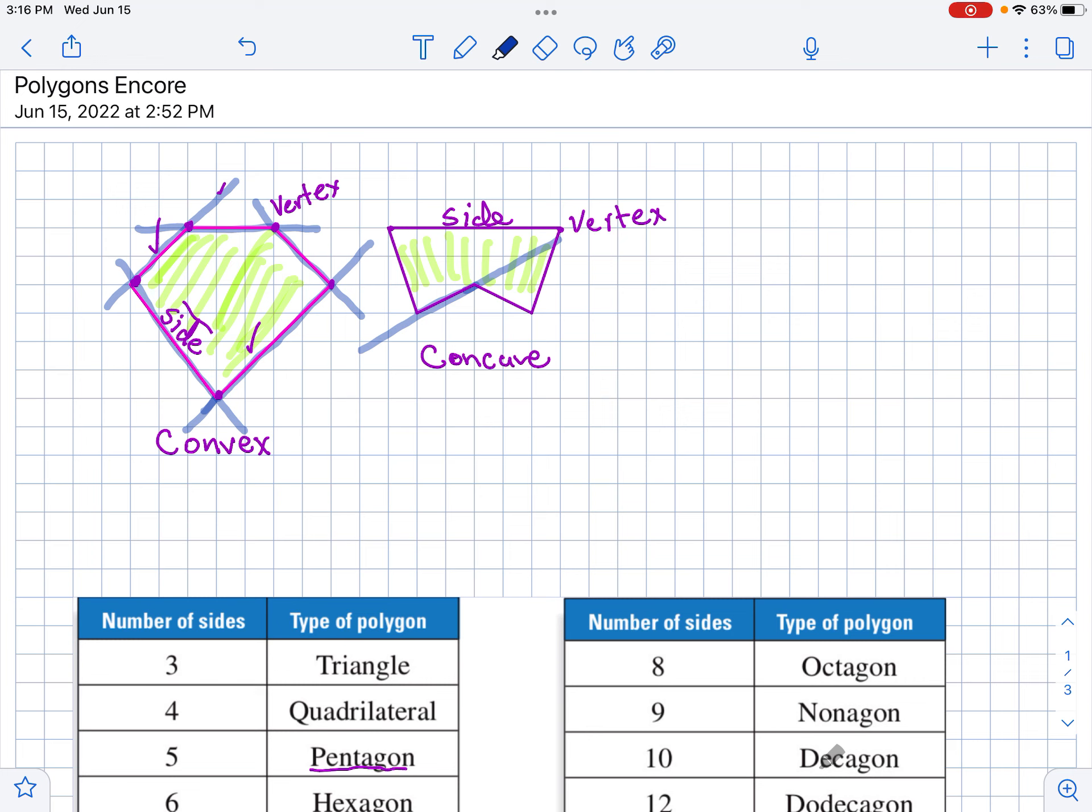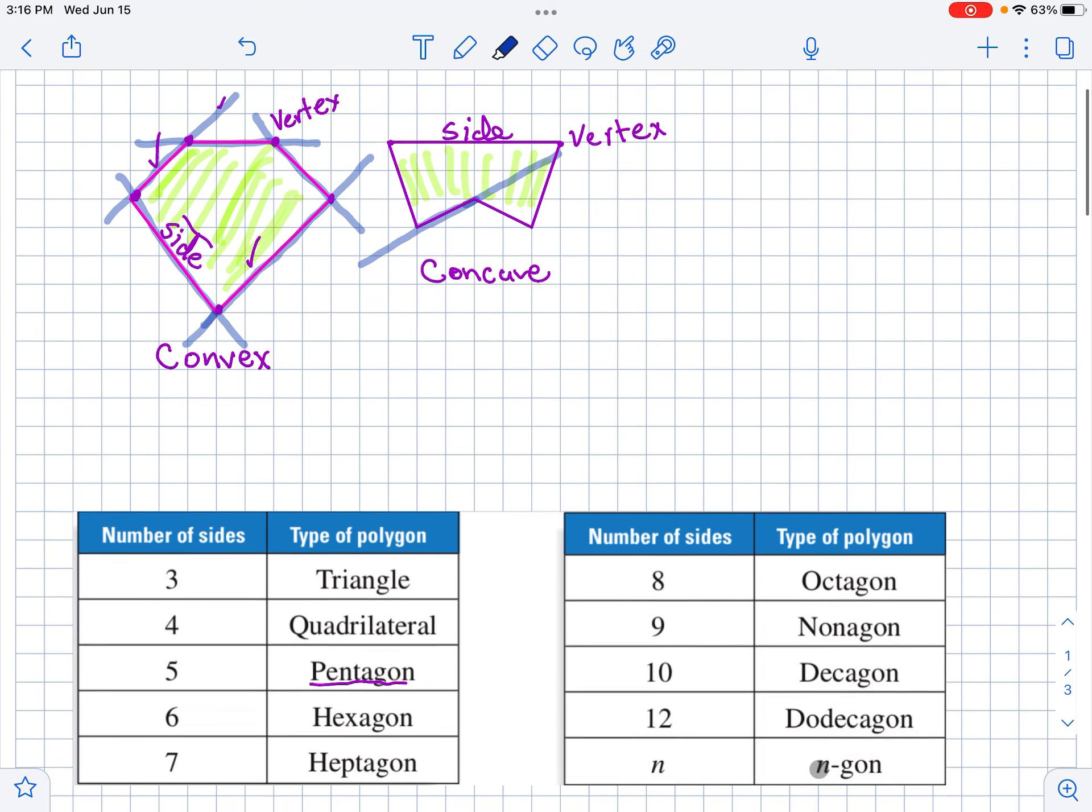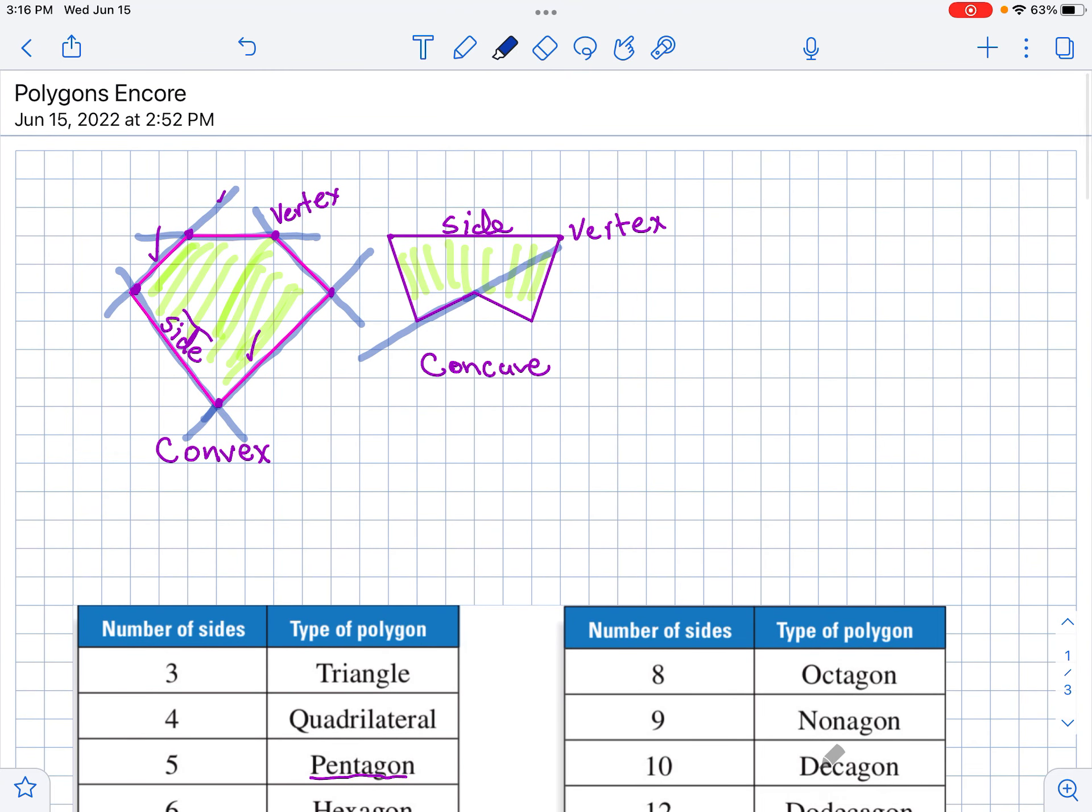When that happens, what we have is a concave polygon. So, this polygon here, the second one, is a concave polygon. Now, one other thing, remember, if all the sides of a polygon are of equal length, if all the segments have an equal length, we call that equilateral. If all the angles of a polygon are of the same measure, we call that equiangular.